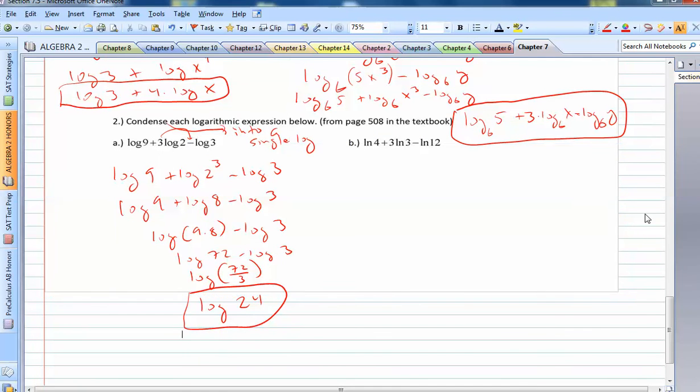Here we see ln. Who cares? As long as the bases are the same, we can expand. We can combine whatever we want to do as long as the bases are the same. And ln, of course, is log of base e. So ln 4 plus ln 3 cubed minus ln 12. ln 4 plus ln 27 minus ln 12. ln 108 minus ln 12. ln 108 over 12. That would be the natural log of 9.